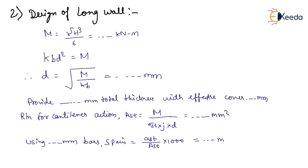Step 2: Design of long wall. The bending moment is calculated using gamma H cubed upon 6, in kilonewton-meter. Equating moment of resistance to bending moment for balanced action, we get K·B·D² equals M. From here, we calculate D equals square root of M upon (K into B).